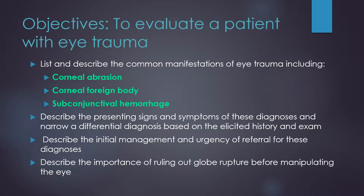We'll review corneal abrasion, corneal foreign body, and subconjunctival hemorrhage. We'll describe the presenting signs and symptoms and practice making a differential diagnosis based on history and exam. We will briefly touch on initial management and urgency of referral for these diagnoses as well.